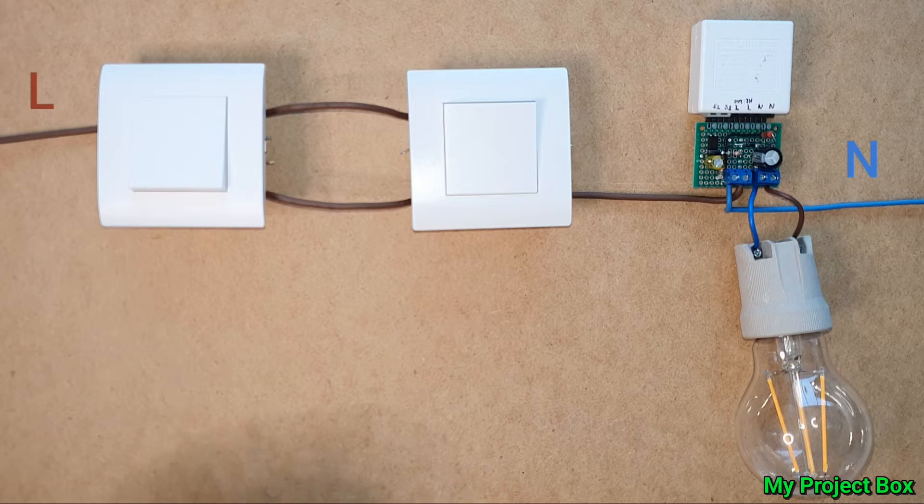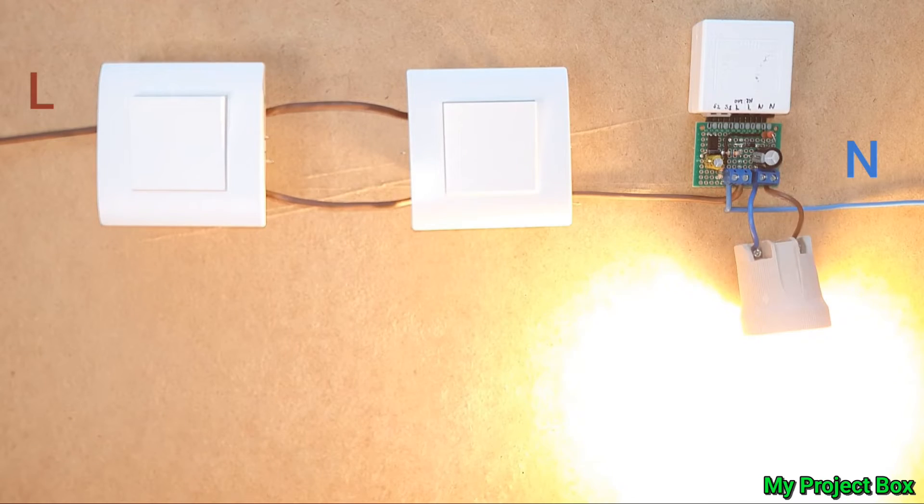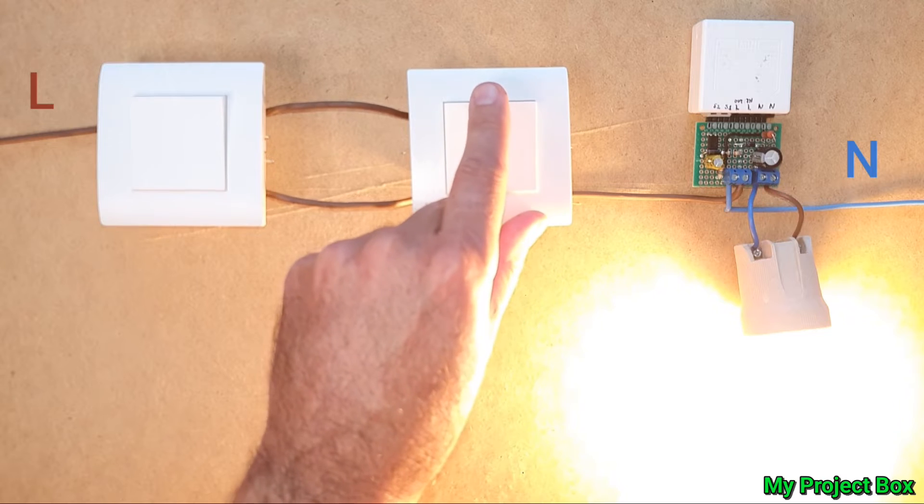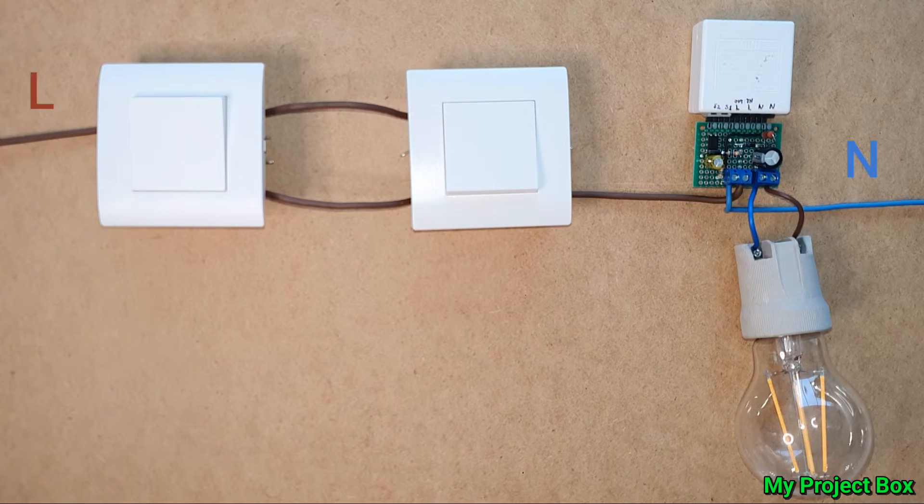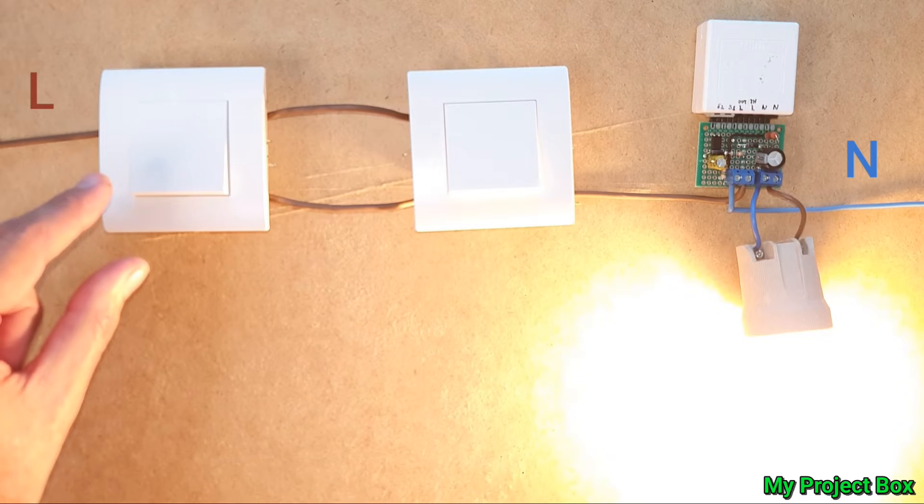So let's test it let's see if it works. So let's flip the first switch and as you can see that turns the light on and then you walk to the other room or on top of the stairs and you turn the other switch on that turns the light off and works without any problem.